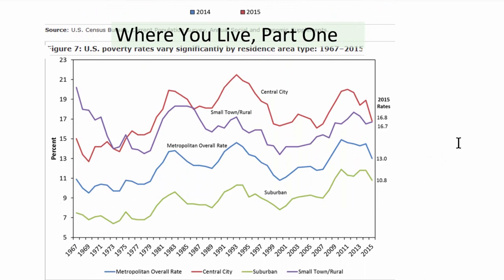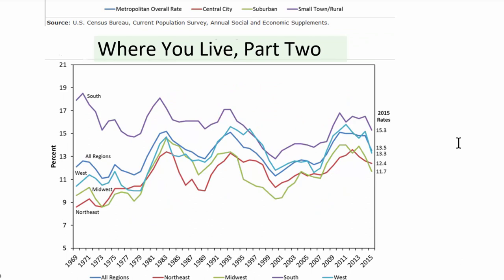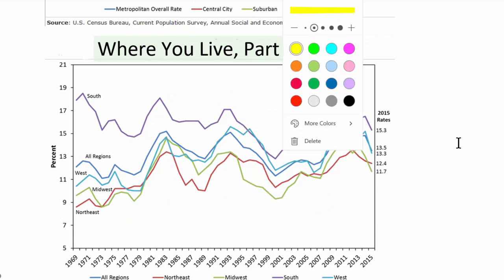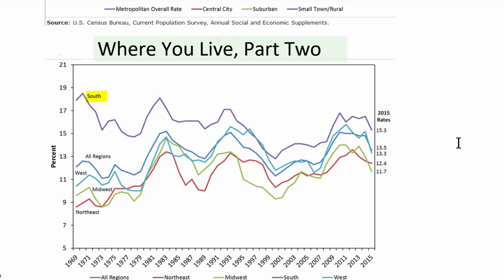Looking at where you live: suburban areas near cities have much lower poverty rates. Highest poverty rates are in inner city areas and very small rural town areas not near a large city. In the United States, the south has much higher chances of poverty than the northeast or midwest — however, since it's much cheaper to live in most areas of the south, and we don't adjust poverty limits for cost of living, it might not be quite as bad as it appears.